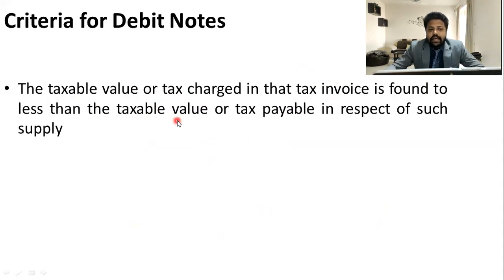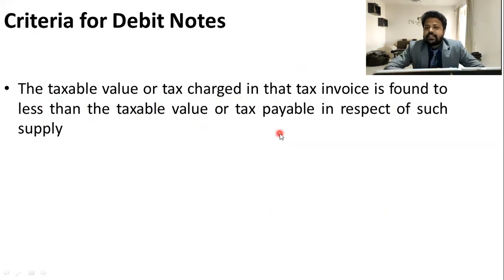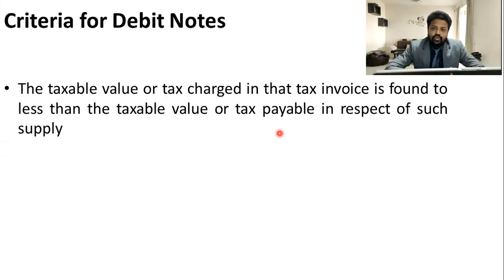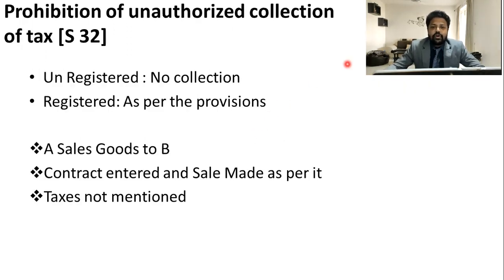For debit notes, there is a single criteria: the taxable value or tax charged in the tax invoice is found to be less than the taxable value. For example, negotiations are going on and I issued a tax invoice for Rs. 100 on the safer side, but the rate gets negotiated at Rs. 110. So for the differential of Rs. 10, I — being the supplier — will issue a debit note. This falls under sections 32 and 33, which is the prohibition of unauthorized collection of tax.